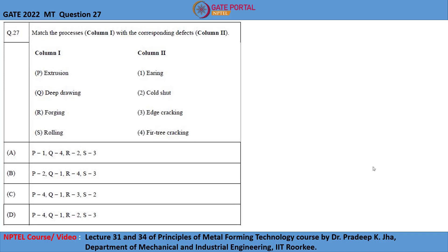In column 1, forming processes such as extrusion, deep drawing, forging, and rolling are given. In column 2, defects such as earring, cold shut, edge cracking, and fir-tree cracking are given. We need to find the defects corresponding to the forming processes shown here.